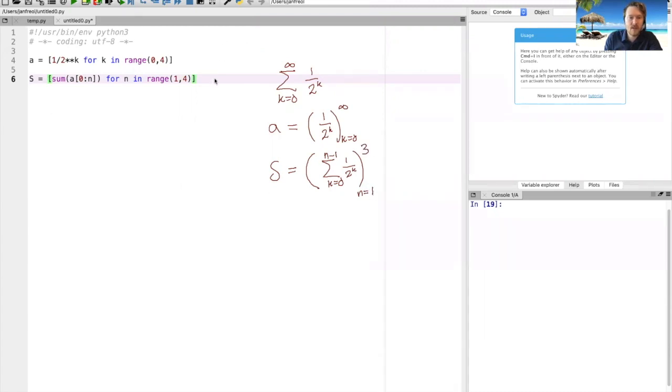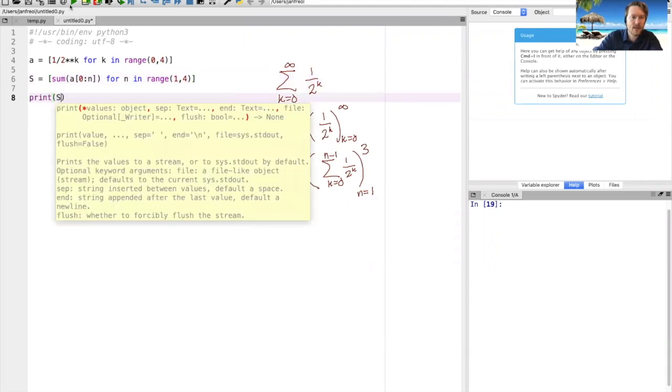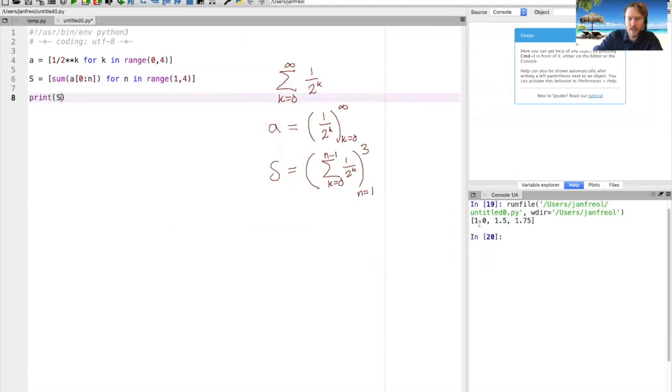To see if this is correct we can now print S to see the contents. Here I first have the partial sum where K goes to zero, then I have two terms, then I have three terms.